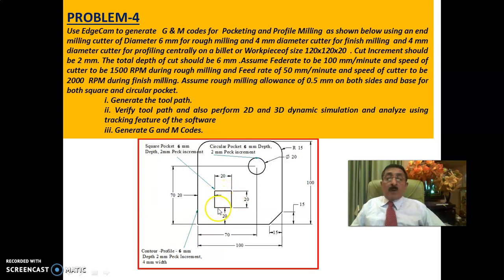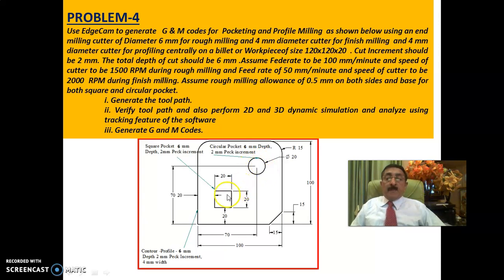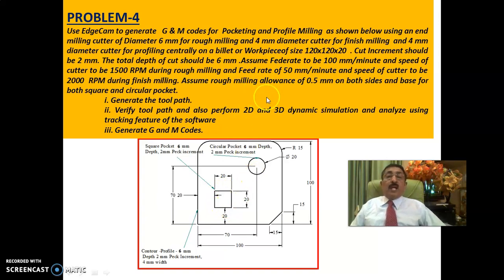The square pocket dimensions are 20 by 20 and the circular pocket diameter is 20. Both the square pocket and circular pocket have 6mm depth of cut and 2mm peck increment, meaning each is done in three passes. Allowances are also being provided as in the previous problem.